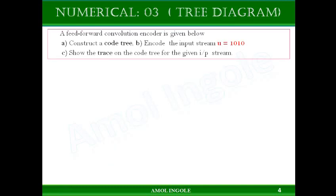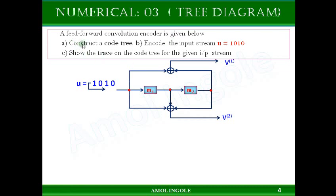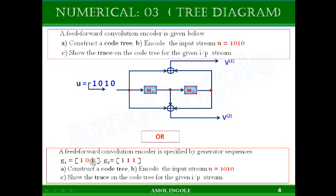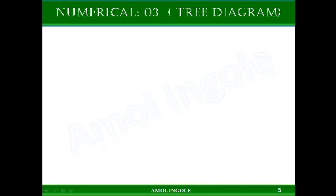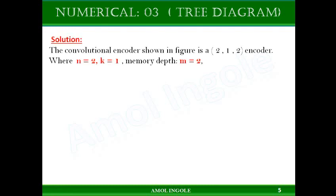Let's discuss one numerical: a feed-forward convolution encoder is shown below. We need to construct a code tree, encode the input bit stream, and show the trace on the code tree for the given input stream. The same statement can also be written in the form of generator sequences — both statements describe the same numerical, one using the encoder diagram and the other using generator sequences. From the statement you can identify the number of outputs, the value of k, the depth of memory, and so on.